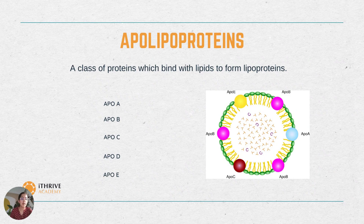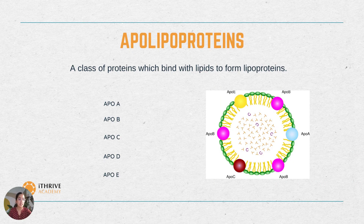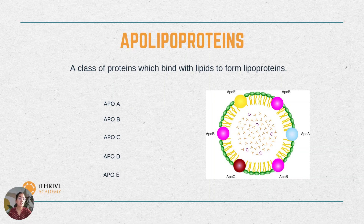Let's discuss what apolipoproteins actually are. These are proteins which bind to lipids to form lipoproteins, whose main function is to transport lipids. Apolipoproteins are important in maintaining the structural integrity and solubility of these lipoproteins. There are 5 major classes: ApoA, ApoB, ApoC, ApoD, and ApoE. ApoA refers to apolipoproteins, especially ApoA1 and ApoA2, which are primarily — but not exclusively — found in HDL. A third member of the ApoA family, ApoA4, is a minor component of chylomicrons.